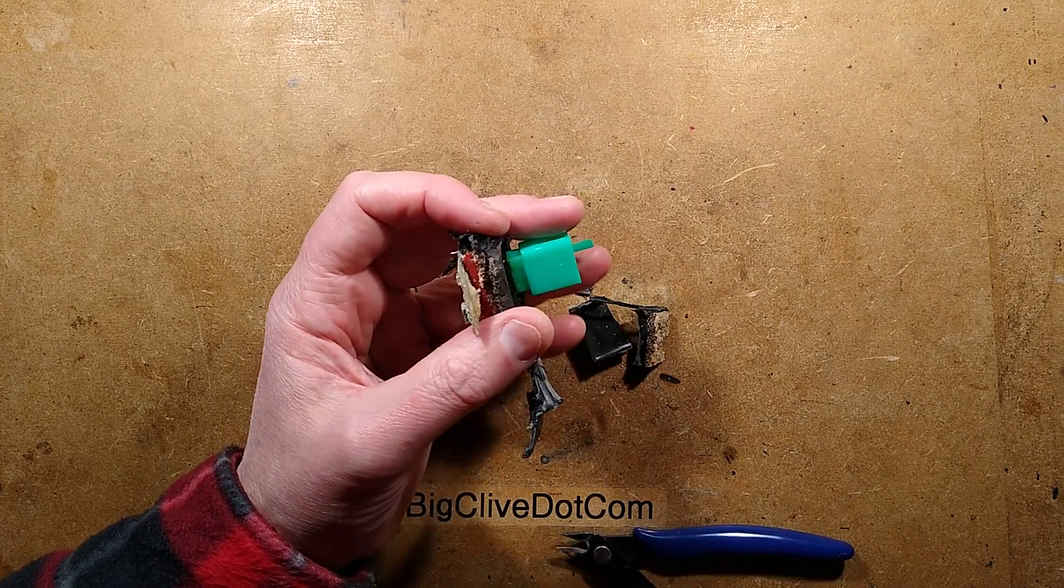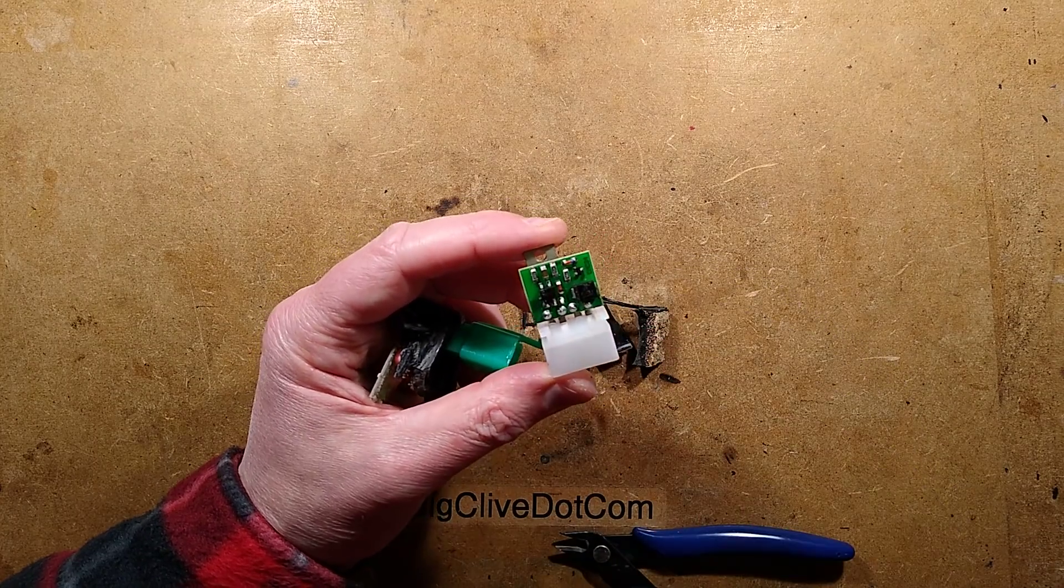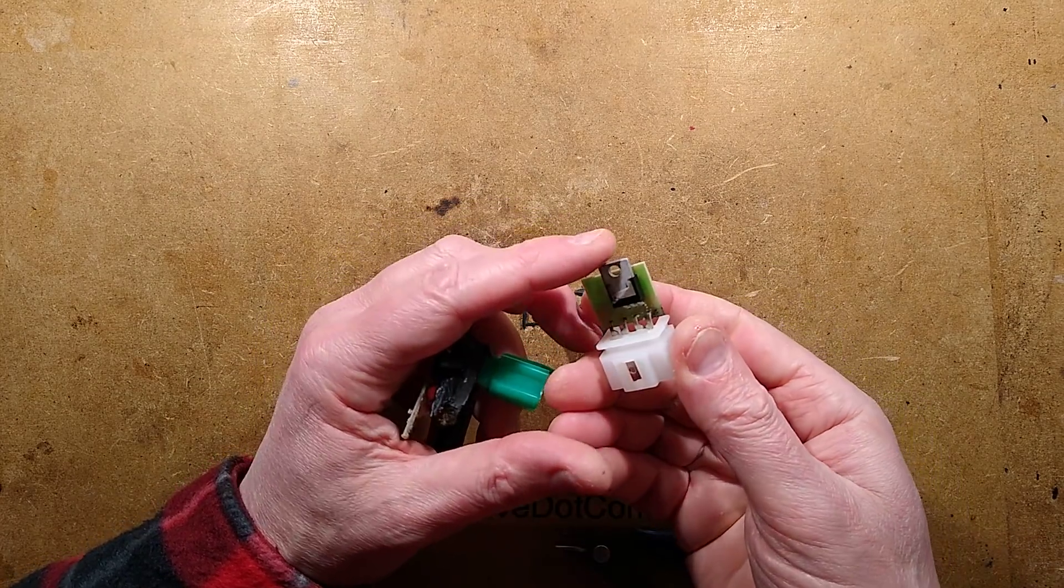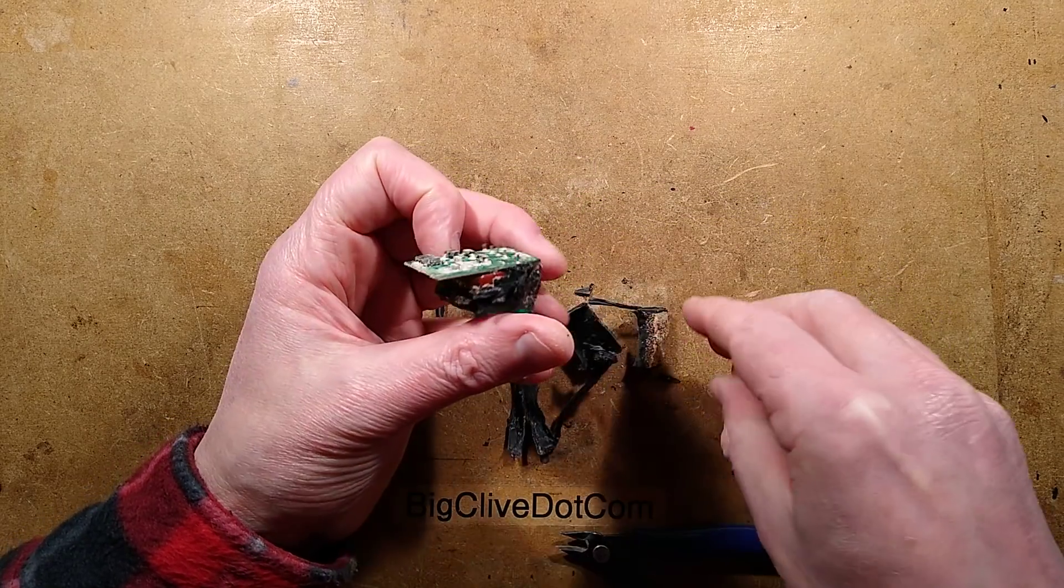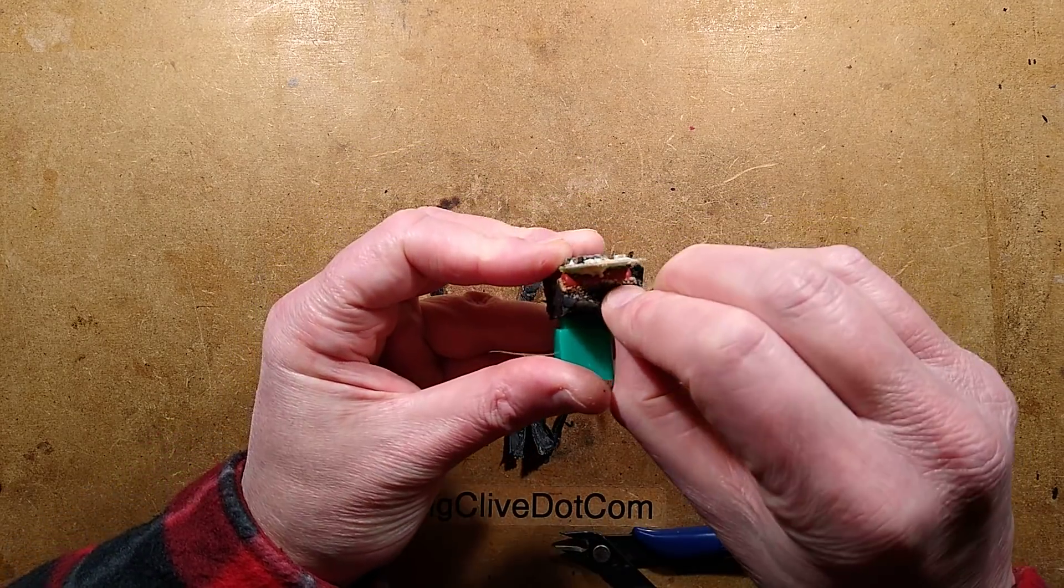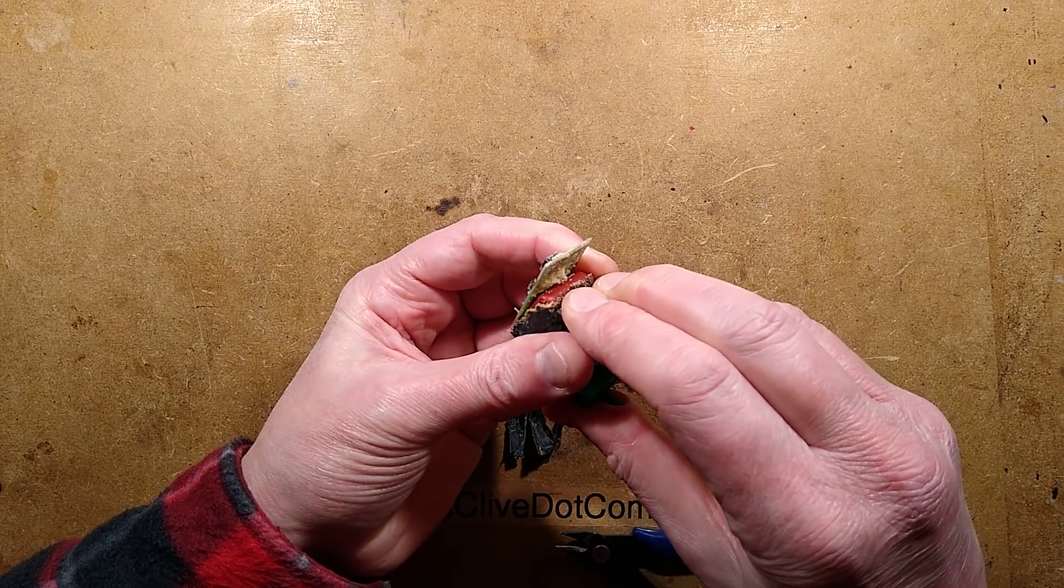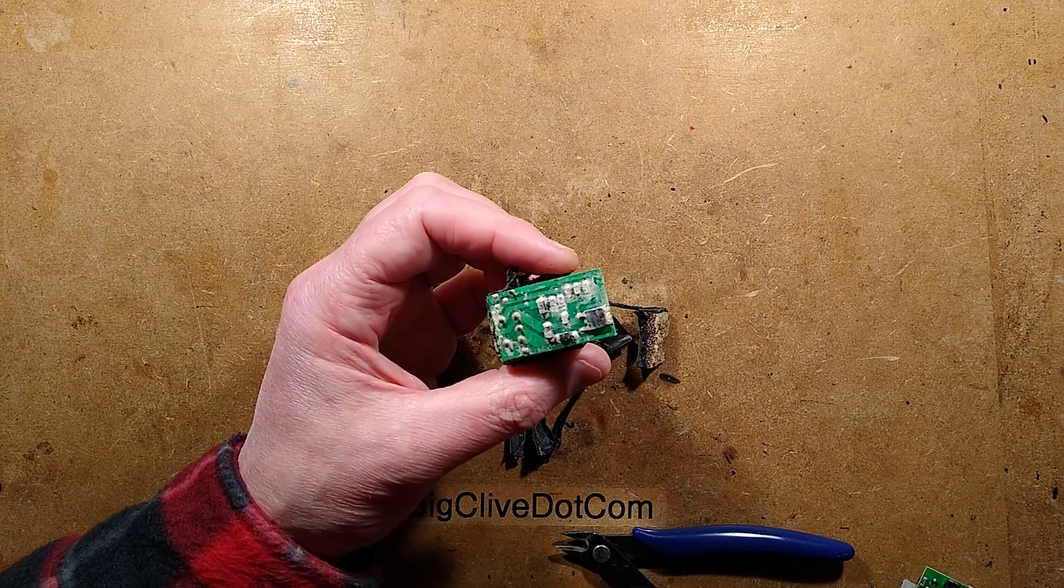In the case of the rectifier and regulator with its appallingly simple circuit, it was at least a nice metal case. But in this case, it was a plastic case that dissolved quite readily in the solvent. So I shall de-pot this completely and reverse-engineer it, then we can explore the circuitry.